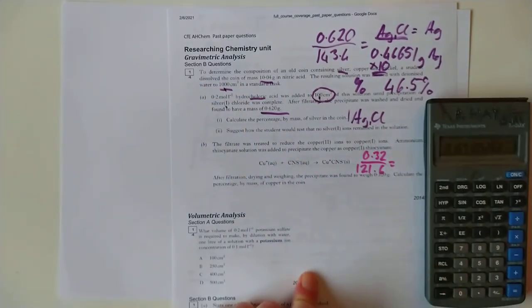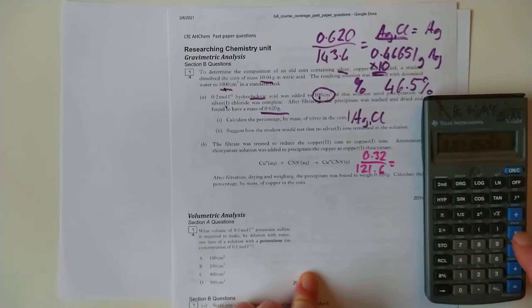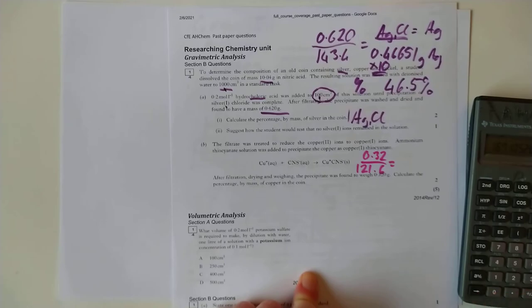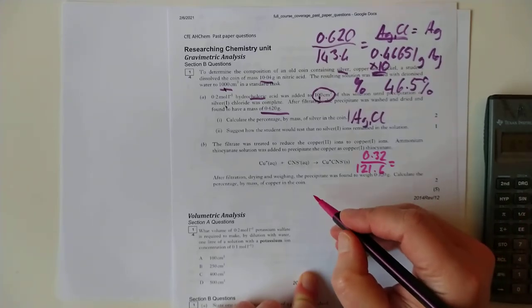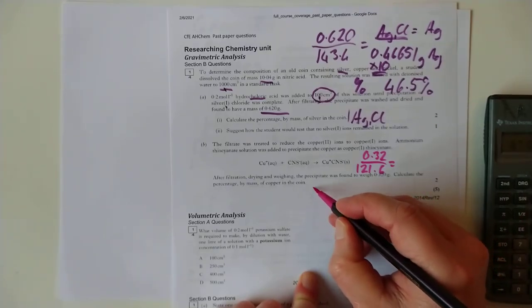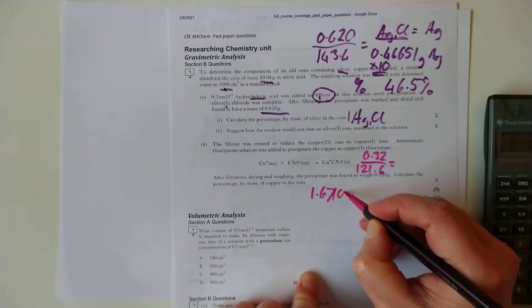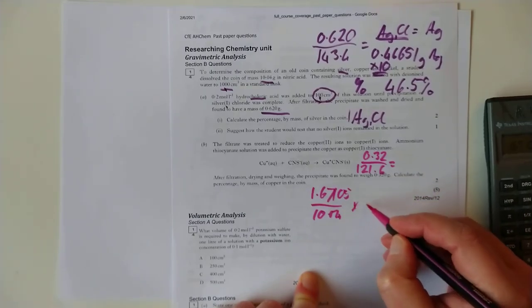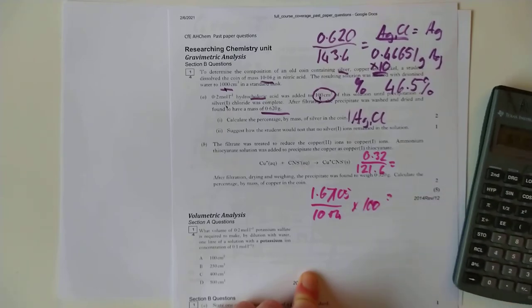Which gives us 1.671 grams of copper compared to your original coin. So 1.67105 over 10.04. That's a percentage times 100. Gives us